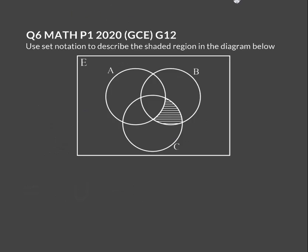It's not a very difficult question. Again, for this answer you could also write C complement intersection A union B, just making sure your brackets are around A union B. The next question asks us to do the same thing — use set notation to describe the shaded region in the diagram below. This one is even a bit more tricky.